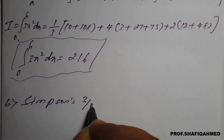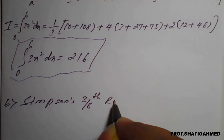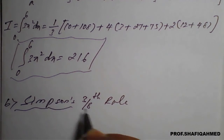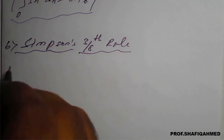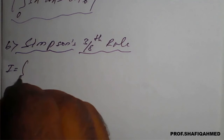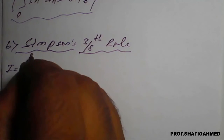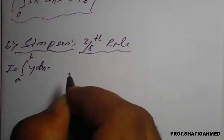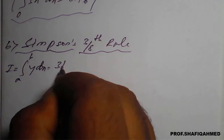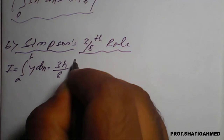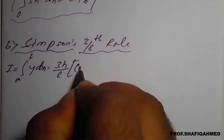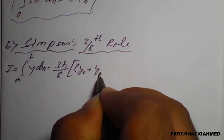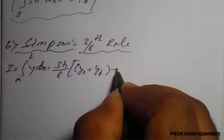Simpson's three-eighth rule. So Simpson's three-eighth rule — we will write the formula first. I is equal to integration a to b, y into dx. Three-eighth rule means 3h upon 8 will come here. We need to again multiply. So y varies from y0 to y6, and here y0 plus y6 will come.